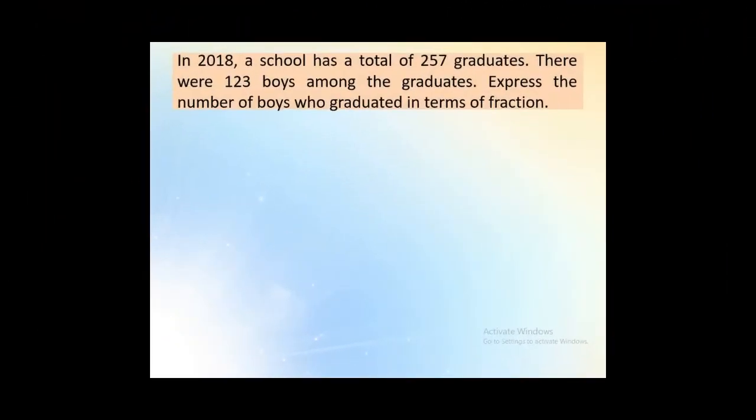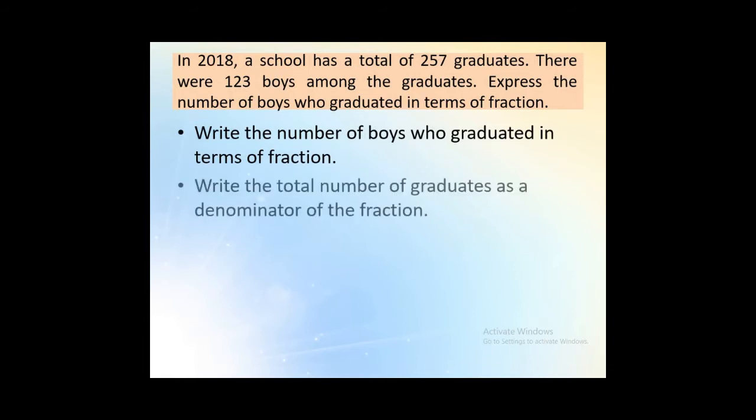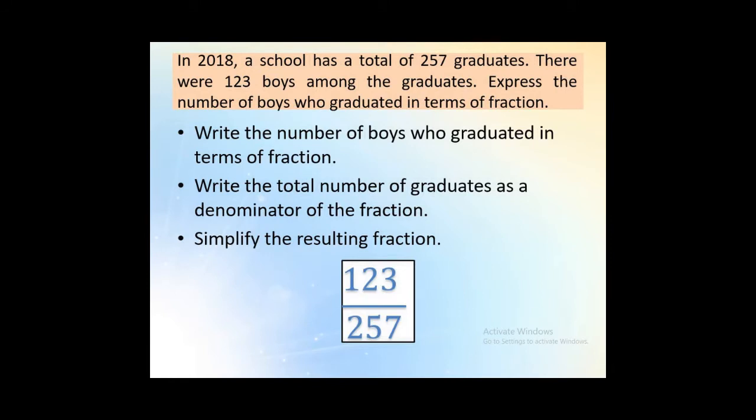In 2018, a school has a total of 257 graduates. There were 123 boys among the graduates. Express the number of boys who graduated in terms of fraction. First, write the number of boys who graduated in terms of fraction. Then, write the total number of graduates as a denominator of the fraction. Then, simplify the resulting fraction. The answer would be 123 over 257.